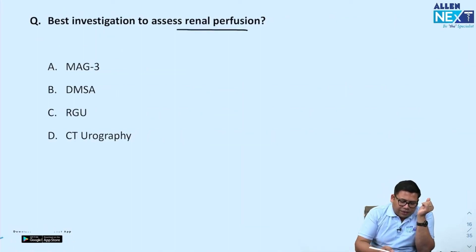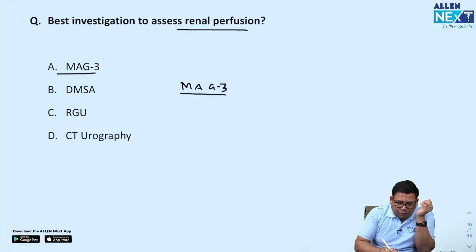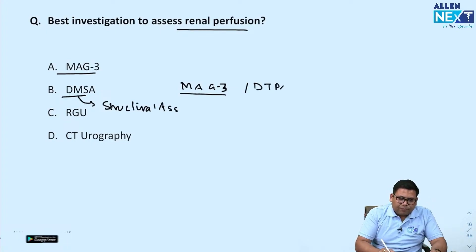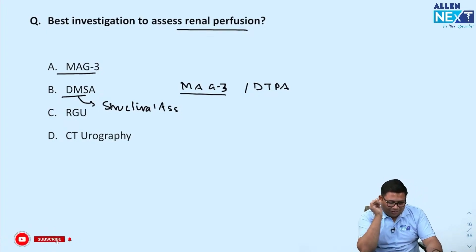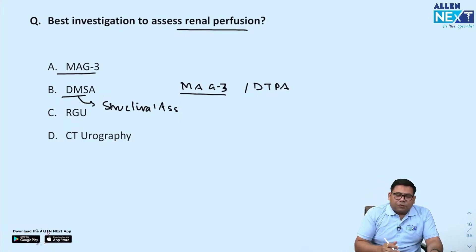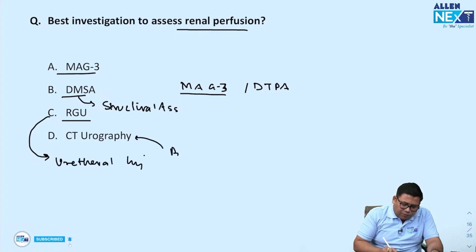The best investigation to assess renal perfusion is MAG3. DMSA scan is for structural assessment. MAG3 or DTPA scan is for renal perfusion. DMSA is structural, RGU (retrograde urethrogram) is for urethral injury, and CT urography is for bladder trauma.